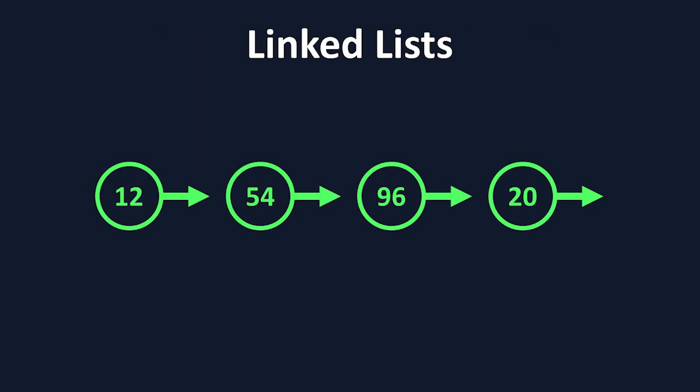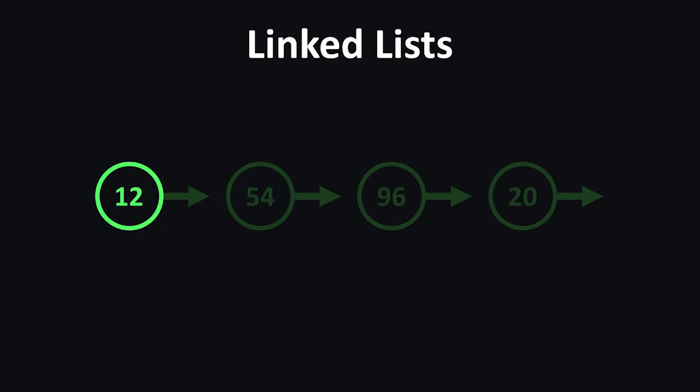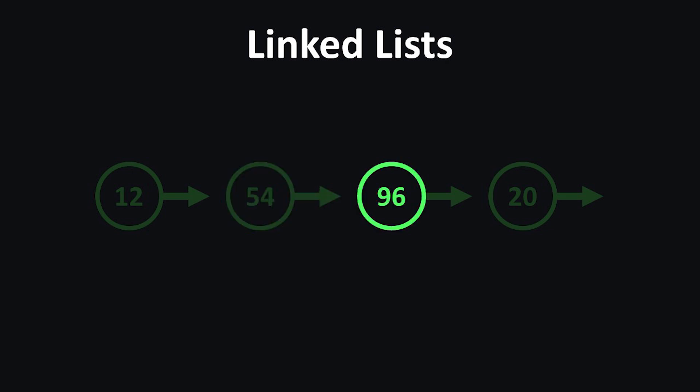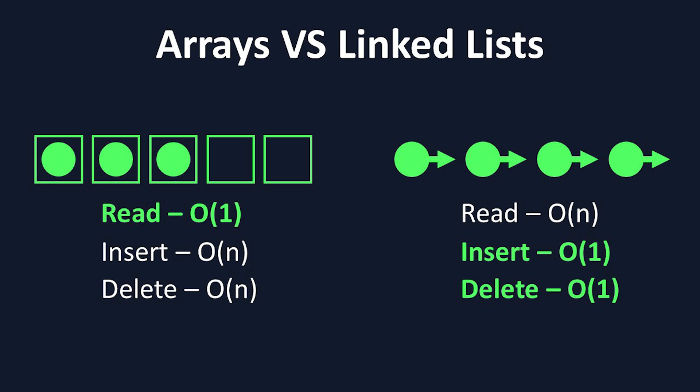The disadvantage of using linked lists is that they do not have indexes, as the elements are not stored right beside each other. This means that to find an element, we have to go through the list starting from the beginning. If we want the third element, we have to first look at the first element, see where it points, go to the second, see where it points, and then we find the third element. If you think of a huge linked list, you can start to understand why it's not the fastest at reading. So to recap, arrays are faster when it comes to reading, and linked lists are faster when it comes to inserting and deleting.